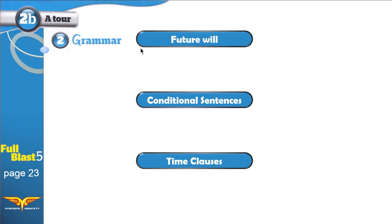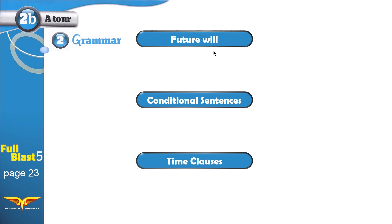Today we have conditional sentences with future will. Let's begin by knowing the future will. I will give you an example of a sentence using future will. Positive: I will buy you PlayStation 4.